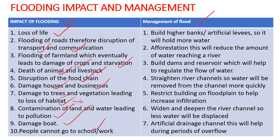Management of flooding includes: building high banks or artificial levees to hold more water; afforestation — planting more trees to help with interception; building dams and reservoirs to regulate water flow and store excess water; straightening the river channel through hard engineering so water moves in a single channel; and restricting building on flood plains — no building zones should be allowed close to a river.